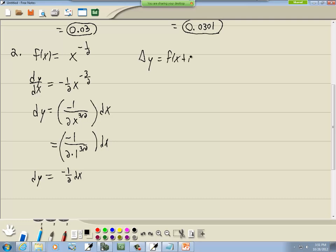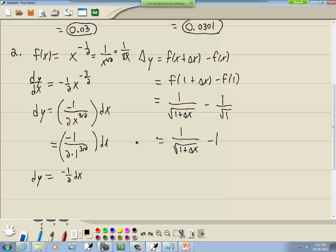Okay. Delta y is equal to f of x plus delta x minus f of x. And x, we said, was 1. So, we've got f of 1 plus delta x minus f of 1. Well, if I plug those into my f of x, x to the negative 1 half, that's the same as 1 over x to the positive 1 half, which is 1 over the square root of x. So, if I put this in, I'm going to have 1 over the square root of 1 plus delta x minus 1 over the square root of 1. So, this gives us 1 over the square root of 1 plus delta x minus 1. And that's our delta y.